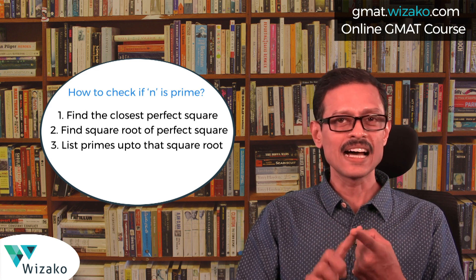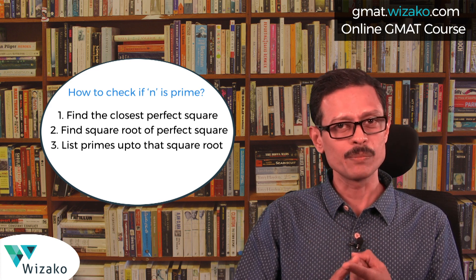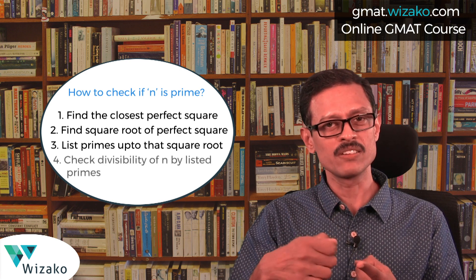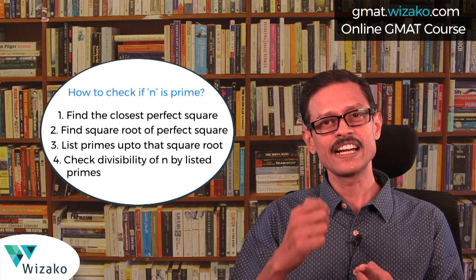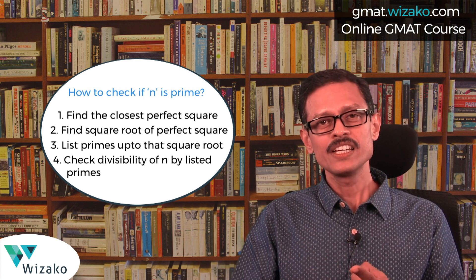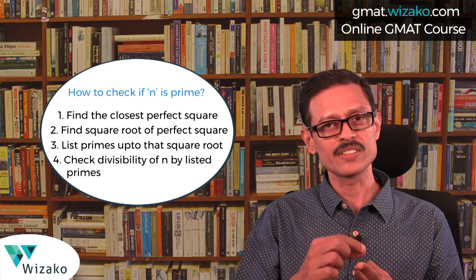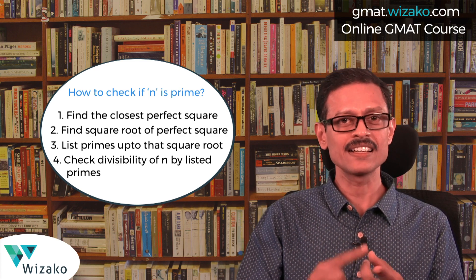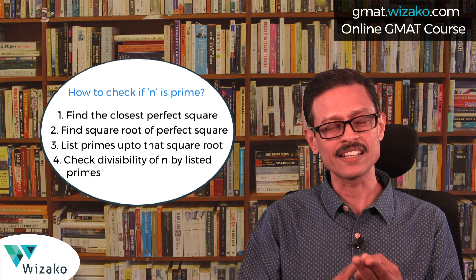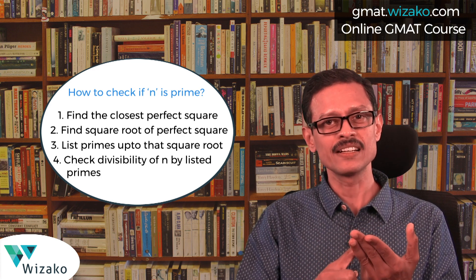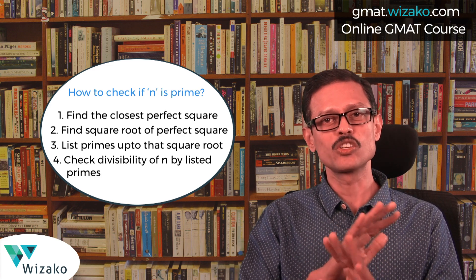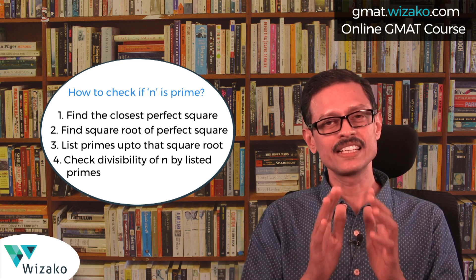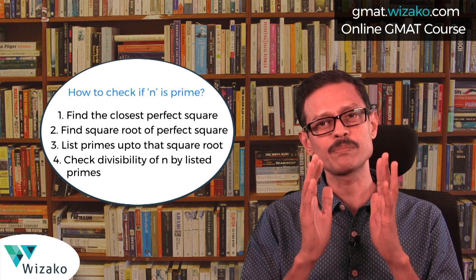Step 3: list down primes up to the square root. The last step is where you'll get the answer. Pick each one of those primes and check whether it divides n. If any one of those prime numbers divides n, then n has 1, n, and that prime as factors — meaning it's got three factors and is not prime. If none of the primes divide n, then n is a prime number.